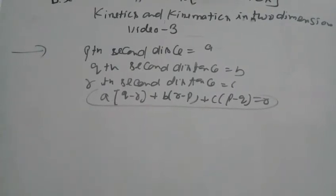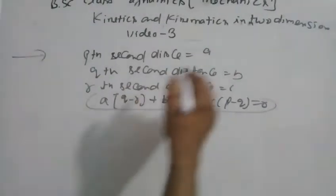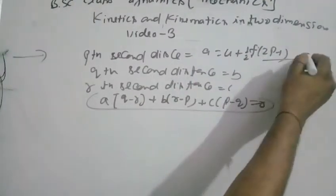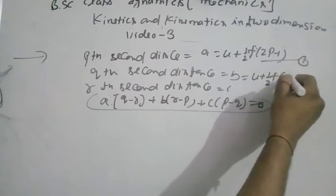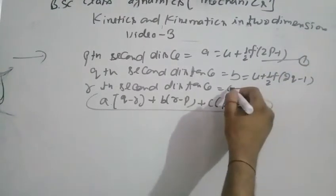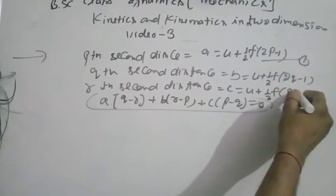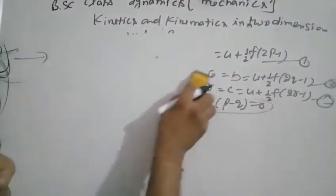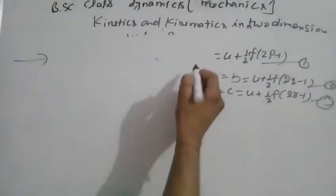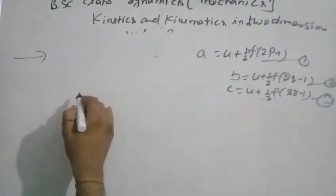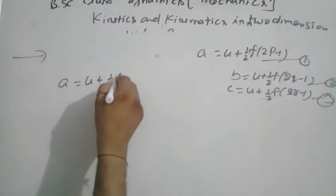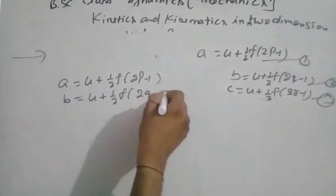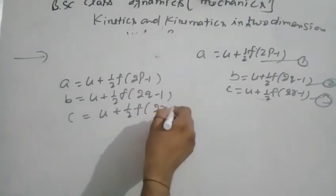Distance in the pth second equals a, qth second equals b, and rth second equals c. So a equals u plus half f(2p minus 1), b equals u plus half f(2q minus 1), and c equals u plus half f(2r minus 1). These are equations 1, 2, and 3.